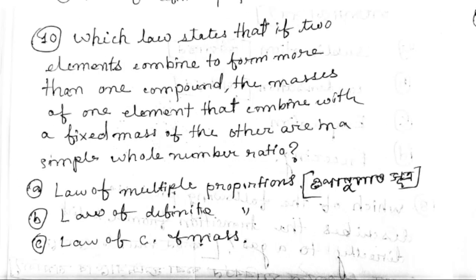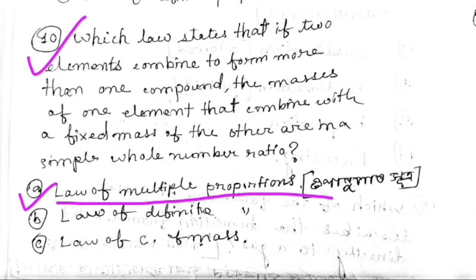Which law states that if two elements combine to form more than one compound, the masses of one element that combine with a fixed mass of the other are in a simple whole number ratio? That is the law of multiple proportions.